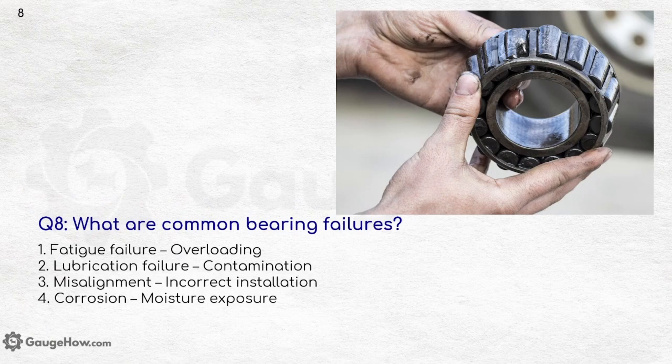What are common bearing failures? Fatigue failure, that is overloading; lubrication failure, that is contamination; misalignment, that is incorrect installation; and corrosion, that is moisture exposure. Misalignment has been reduced due to the use of advanced robots, but the other three remain constant — corrosion is due to moisture exposure, fatigue failure is due to overloading, and lubrication failure involves contamination from poor quality lubricants.